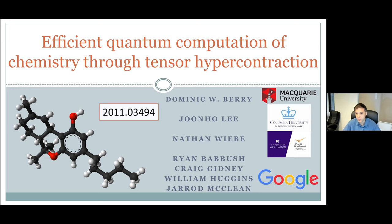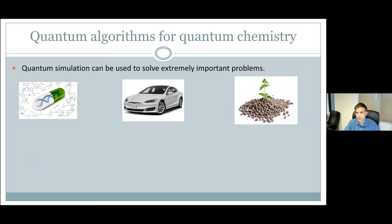And Nathan Wiebe, who was at Washington and has recently moved to Toronto. The general motivation for quantum algorithms for quantum chemistry is that if you can simulate chemicals, you can simulate a whole lot of different chemicals to screen them for ones that have particular properties. For example, pharmaceuticals, batteries, or fertilizer. Fertilizer is a particular case of interest because the method for fixing nitrogen industrially is inefficient, whereas the biological process is more efficient, but it's based on a large chemical called FeMoco, which is difficult to simulate.